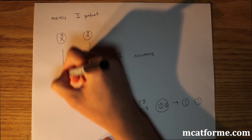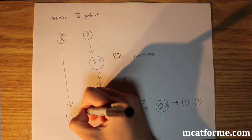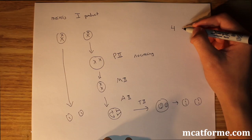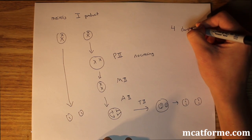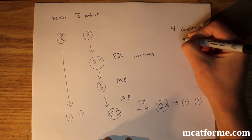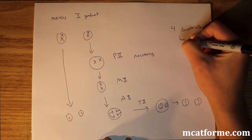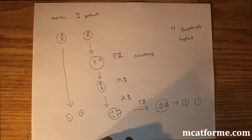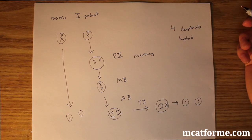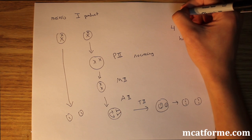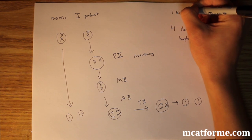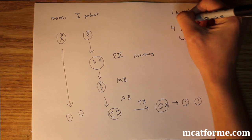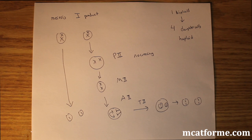Each of those two cells from meiosis 1 produces two more cells, so at the end of the day we produce four daughter cells, and these are haploid. We started with one parent diploid cell and produced four haploid daughter cells.